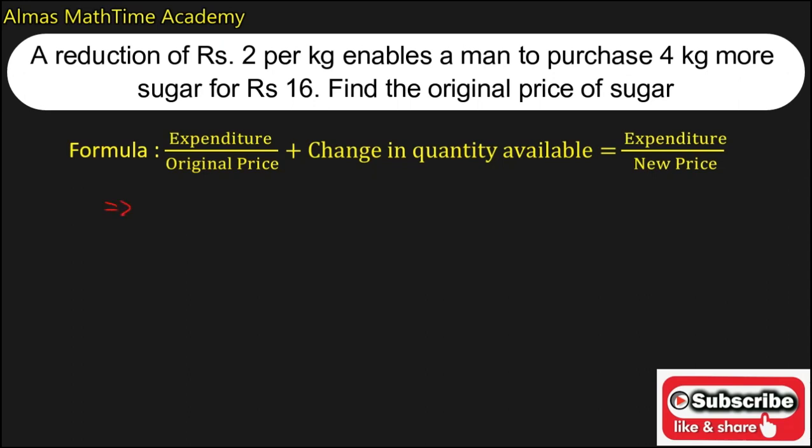See, first we have to consider original price is equal to x rupees. In the question it is given a reduction of 2 rupees per kg, that is nothing but the new price of the sugar is equal to original price, that is x minus the price of reduction, that is 2 rupees. Now the new price is equal to x minus 2 rupees.